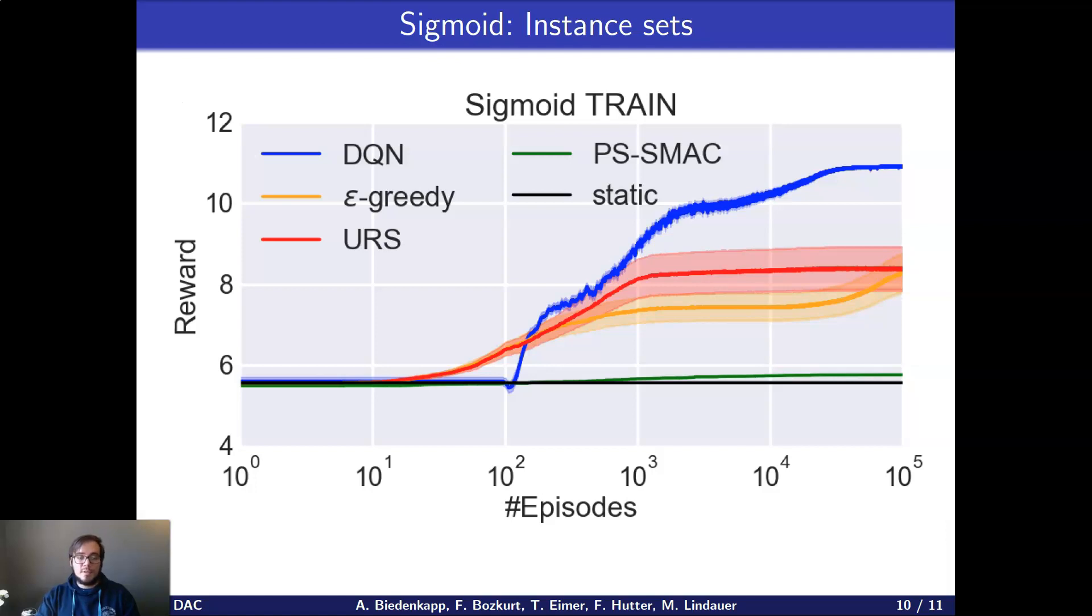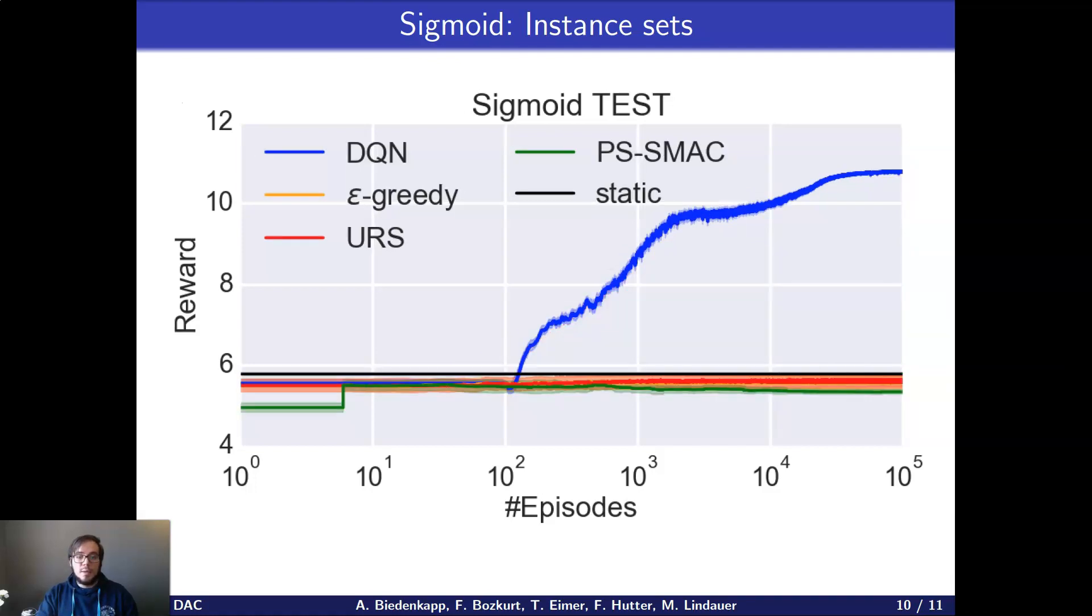Whereas the tabular ones, Epsilon Greedy and DQRS are struggling a bit, but they are definitely performing better than the other two baselines. We also saw that the tabular Q-learning agents struggled to generalize to unseen test functions, but that is to be expected with their tabular nature. However, the DQN still is able to solve all the test instances and the performance only slightly lags behind that of the performance on the training set.